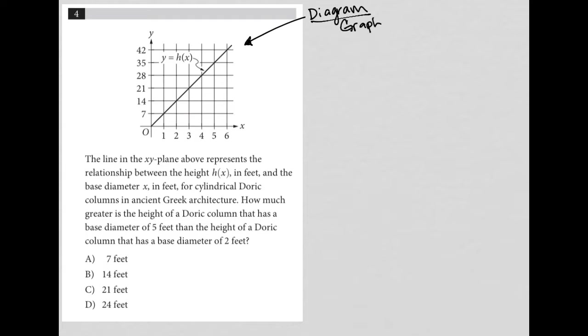Whenever I have a graph question, I pay very close attention to the ordered pairs or the points that are provided. There are no points on here, but I can find some because this line goes straight through these intersections. For instance, I have 1, 7 and 2, 14, and so on.